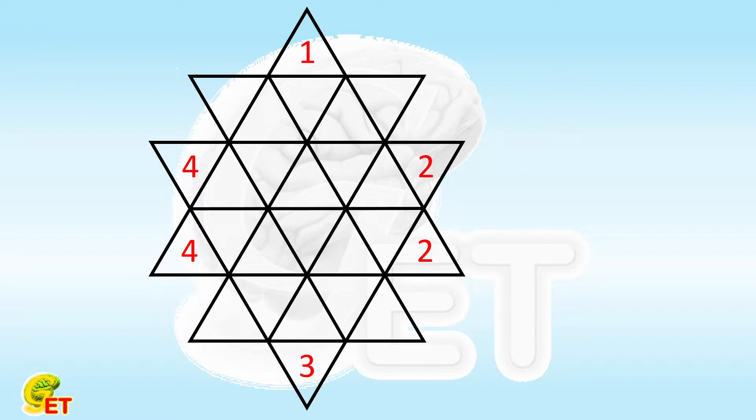For example, we start from the one on the top, just place 2, 3, 4 below it. Then, let's look here. There are already 2 and 3 in this triangle, and 4 in this triangle. So only 1 can be placed in this position.